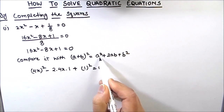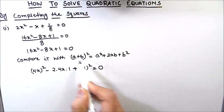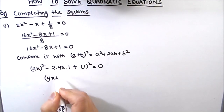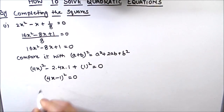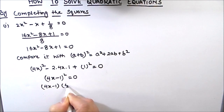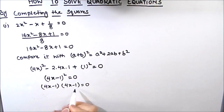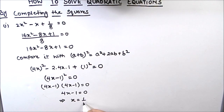This expression is of the form a squared minus 2ab plus b squared, so it can be written as (4x minus 1) squared equals 0, which means (4x minus 1)(4x minus 1) equals 0. Both roots are equal, so the equation has only one solution: 4x minus 1 equals 0, giving x equals 1 by 4.